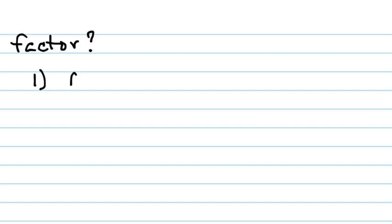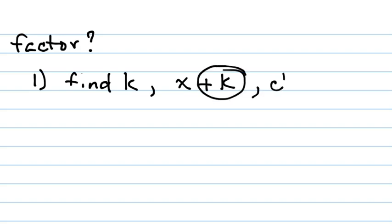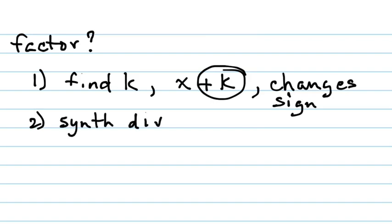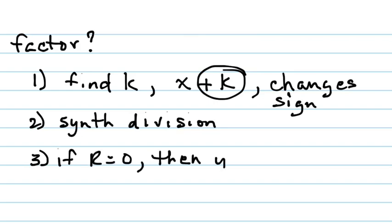It's only a factor if, after you plug in your k, you get a remainder of zero. The first thing is to find our k. Remember, these are given to you in the form of x plus k, so we have to pull our k away from our x — that always changes the sign. If it looks positive, it'll be negative; if it looks negative, use positive. Then we just do the synthetic division. Watch out for missing terms and signs. If the remainder equals zero, then yes, it is a factor; if it doesn't, then no.